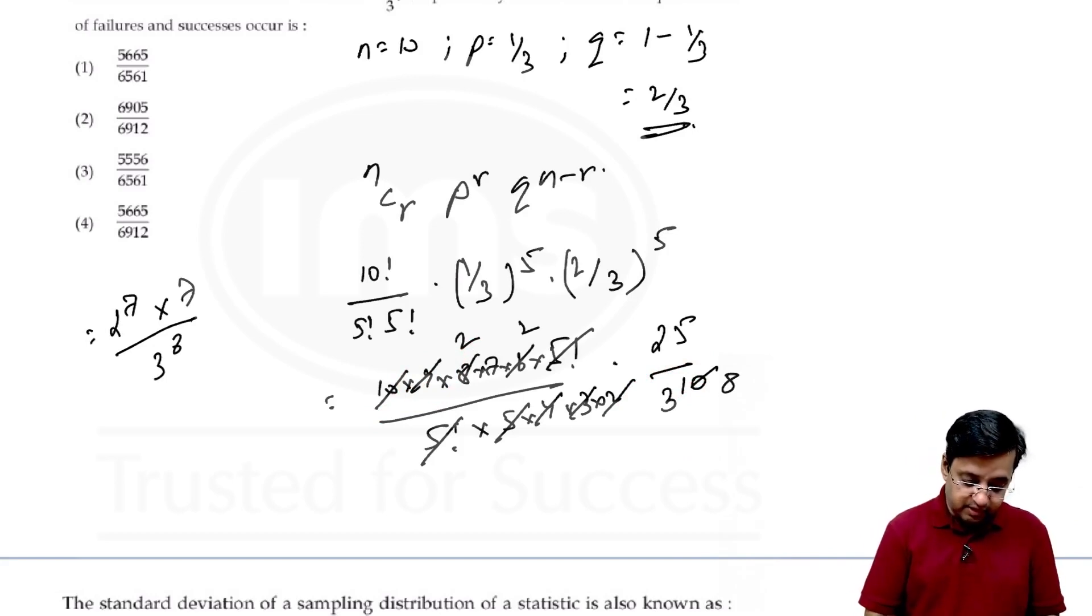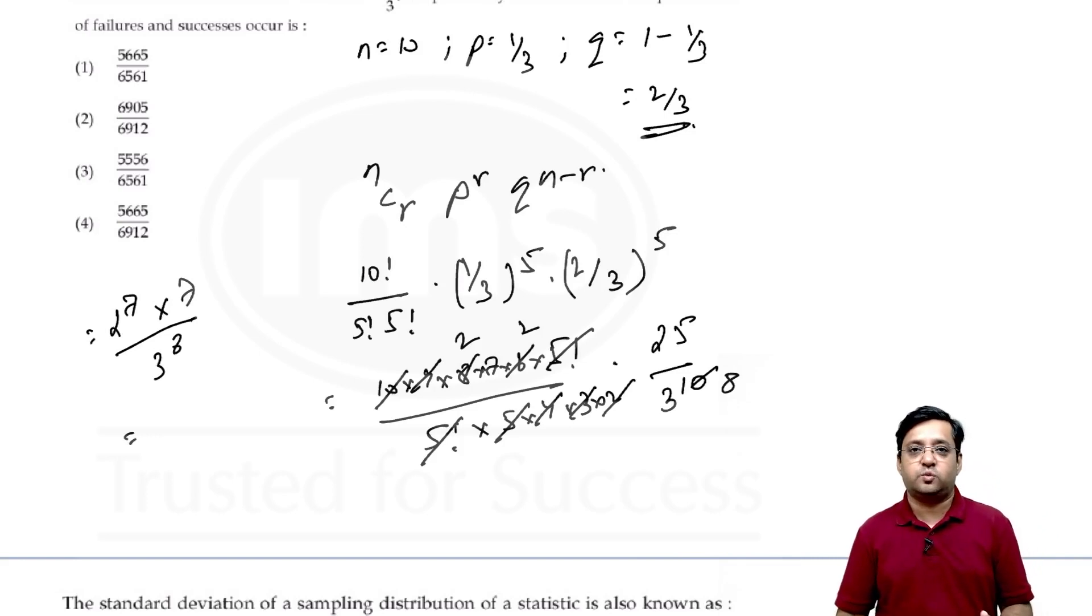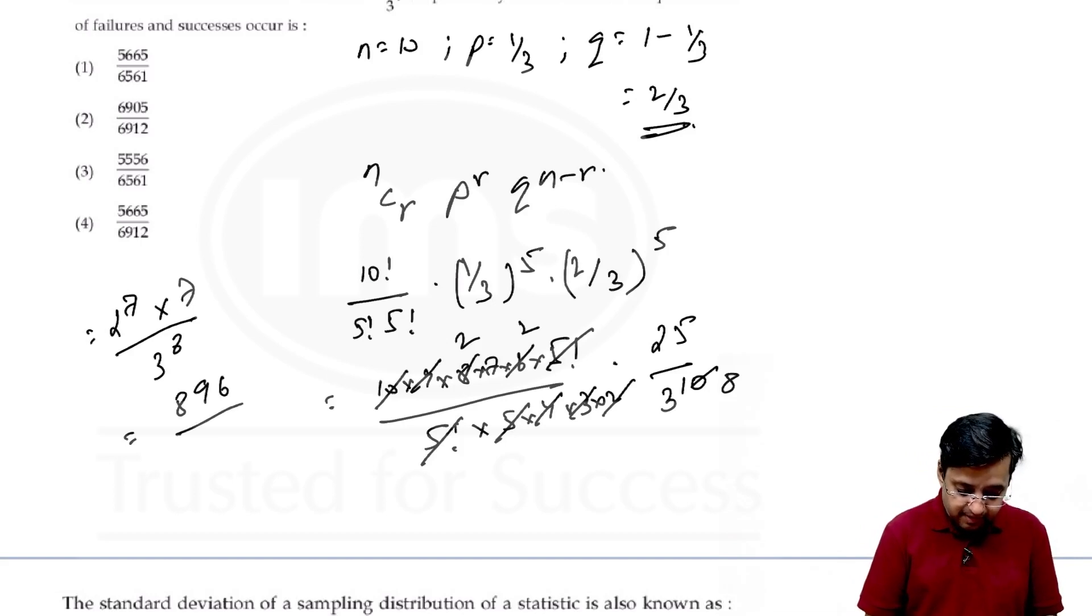2 to the power 7 is left out and here we have 3 to the power 10 but we have 9 here. If we cancel out this will become 8, that is 3 squared. This will become 3, 8. Now 2 to the power 7 is 128 and if you multiply 128 with 7, you are going to get 896. So 896 by 3 to the power 8 is 6561.